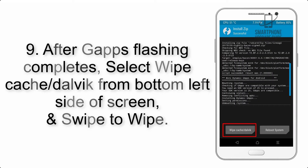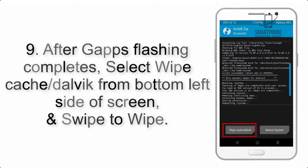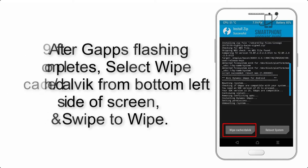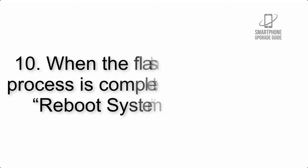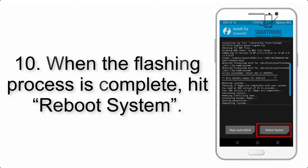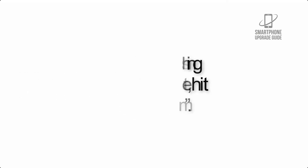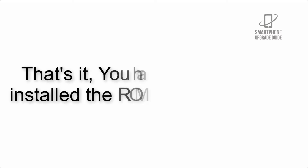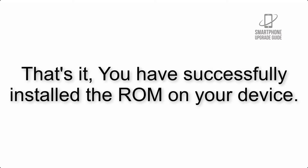Step 9: after GApps flashing completes, select Wipe Cache and Dalvik from the bottom left side of the screen and swipe to wipe. Step 10: when the flashing process is complete, hit Reboot System. That's it — you have successfully installed the ROM on your device.